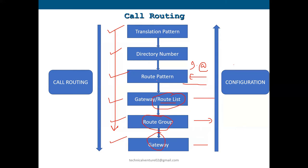Once all those components are configured, you can set up the route pattern and reference the route list. If you are at a single site and want all calls to go through only one gateway, you can mention the gateway directly in the route pattern — no need for a route list, route group, and all the other components. Those are needed when you have multiple sites with multiple gateways and need the same dial pattern to apply across all sites.